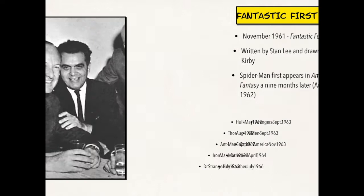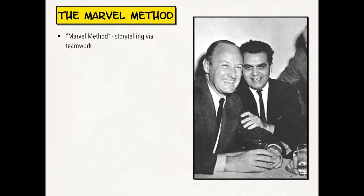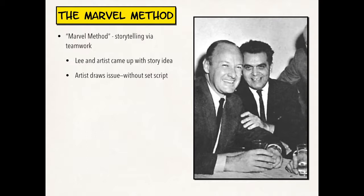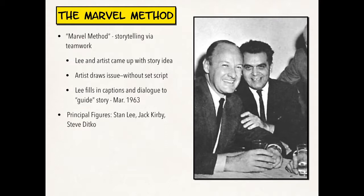One of the things that defines Marvel is what's called the Marvel Method — a form of storytelling via teamwork. The picture there is Stan Lee in the front and Jack Kirby in the back. The Marvel Method worked like this: Stan Lee and the artist would sit together and come up with a story idea, then the artist would draw the issue with no set script. When the artist was finished with the drawings, he would send it over to Stan Lee, who would fill in the captions and dialogue to guide the story. This was officially established in March of 1963. The principal figures were Stan Lee, who did most of the writing, Jack Kirby, and Steve Ditko. Kirby in particular is responsible for most of those heroes, while Ditko is responsible for Doctor Strange and Spider-Man.